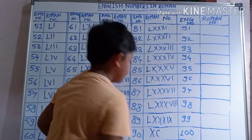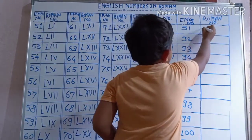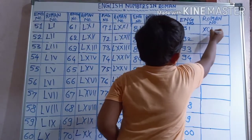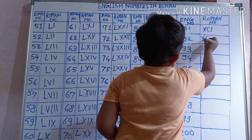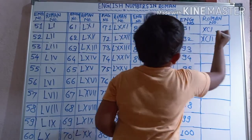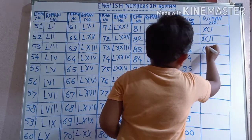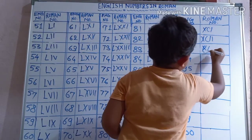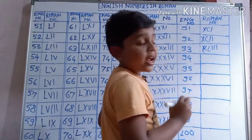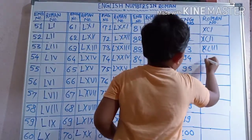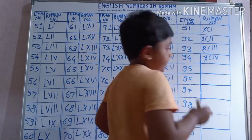90: X, C. 91: X, C, I. 92: X, C, I, I. 93: X, C, I, I, I. 94: X, C, I, V.